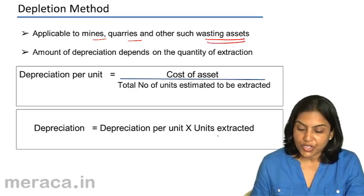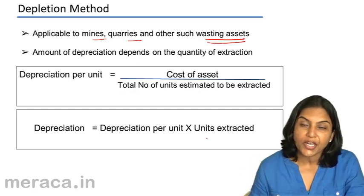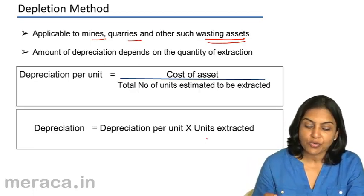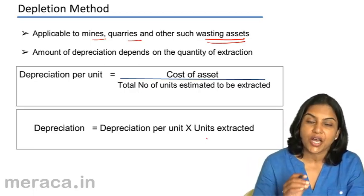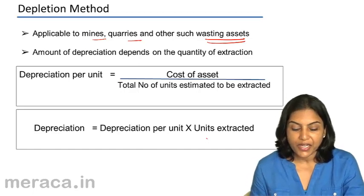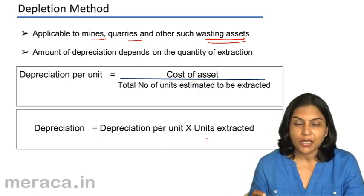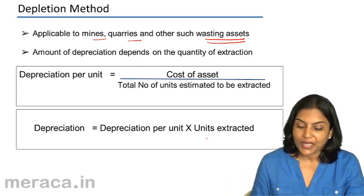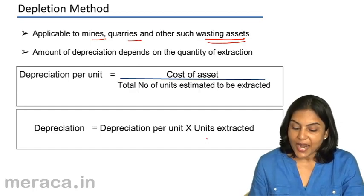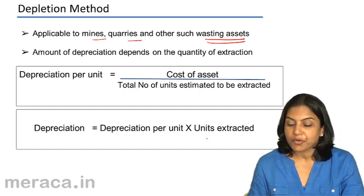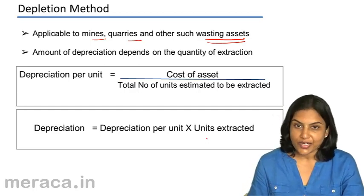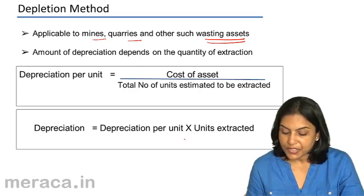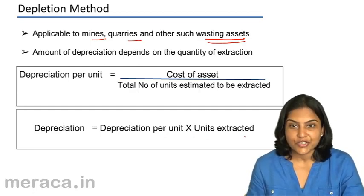The amount of depreciation depends on the quantity of mineral that we extract. Just like we found out the depreciation per machine hour in the earlier method, here we find out the depreciation per unit — per unit of the mineral deposit extracted. We take the cost of the asset and divide it by the total number of units estimated to be extracted. So depreciation equals depreciation per unit multiplied by units extracted.